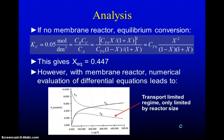If there were no membrane reactor we could analyze the equilibrium conversion and if we take the equilibrium coefficient given and the initial total concentration given that would work out to be 0.447 so the reaction would not go to completion. Completion here would mean less than 50% conversion.